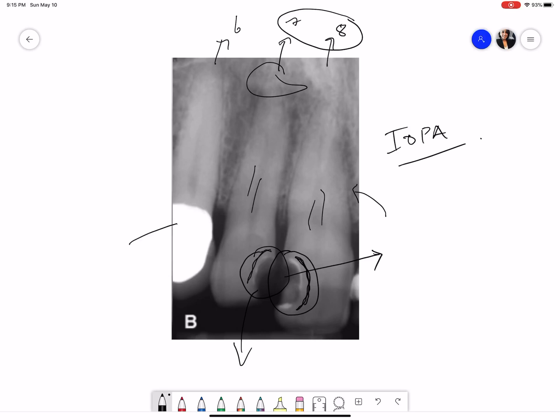We have only a part of number 6 over here, the apical area seems to be cut off and we don't have the distal aspect of this tooth. But with what we have in this radiograph, I can see that this tooth has a coronal restoration because of the appearance with a radiopacity in the center, surrounded by a radiolucent area. This could be suggestive of a PFM crown.